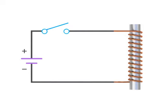To demonstrate the properties of an inductor, we'll add a resistance, or light bulb, to this circuit.